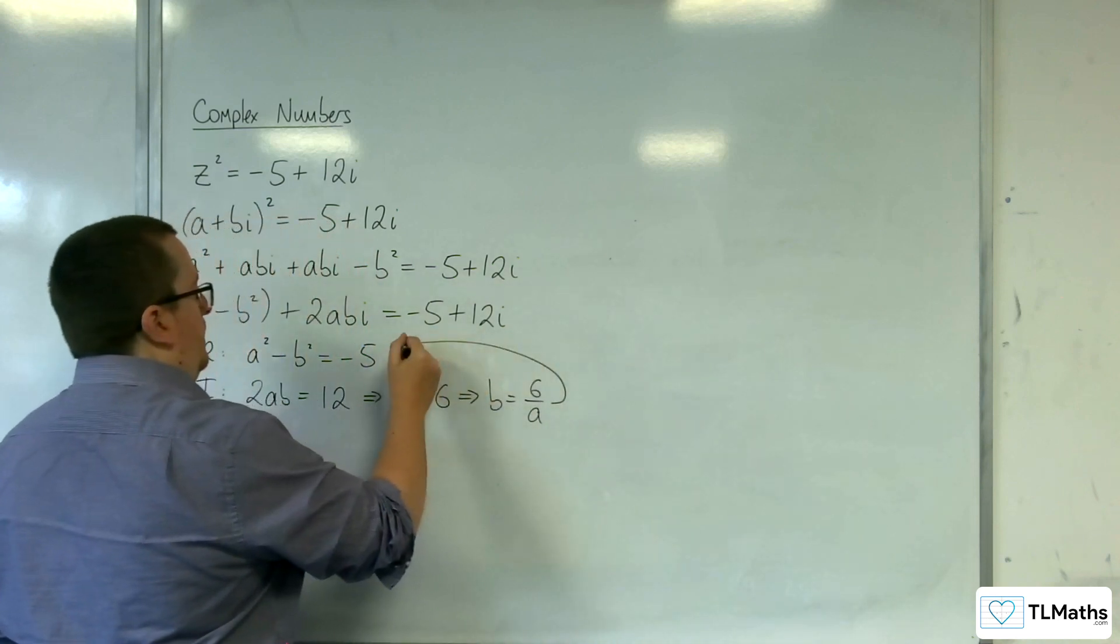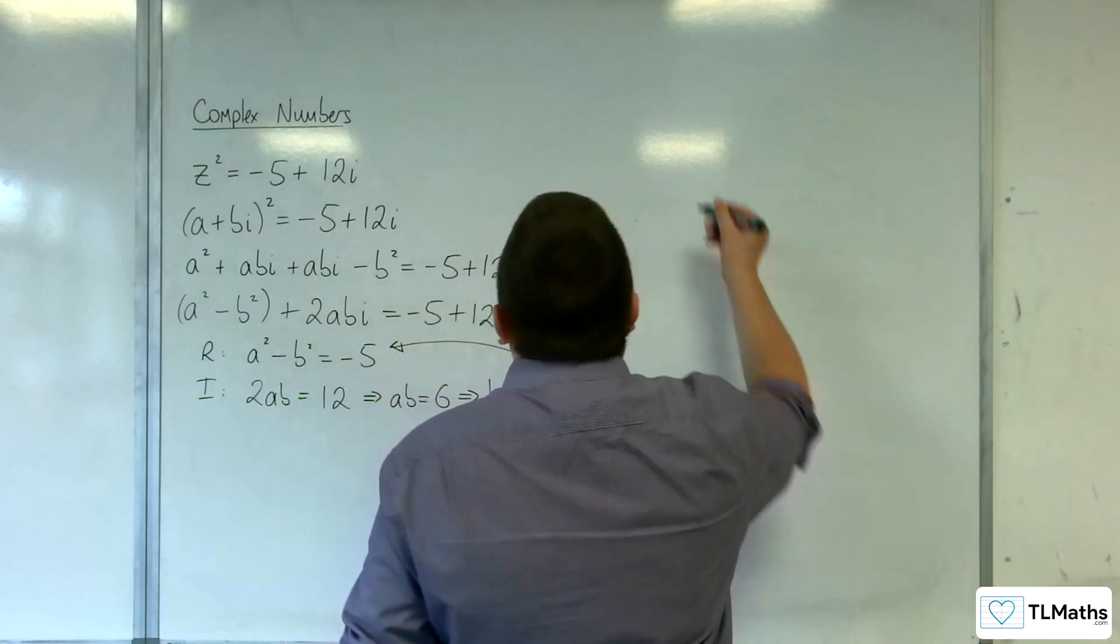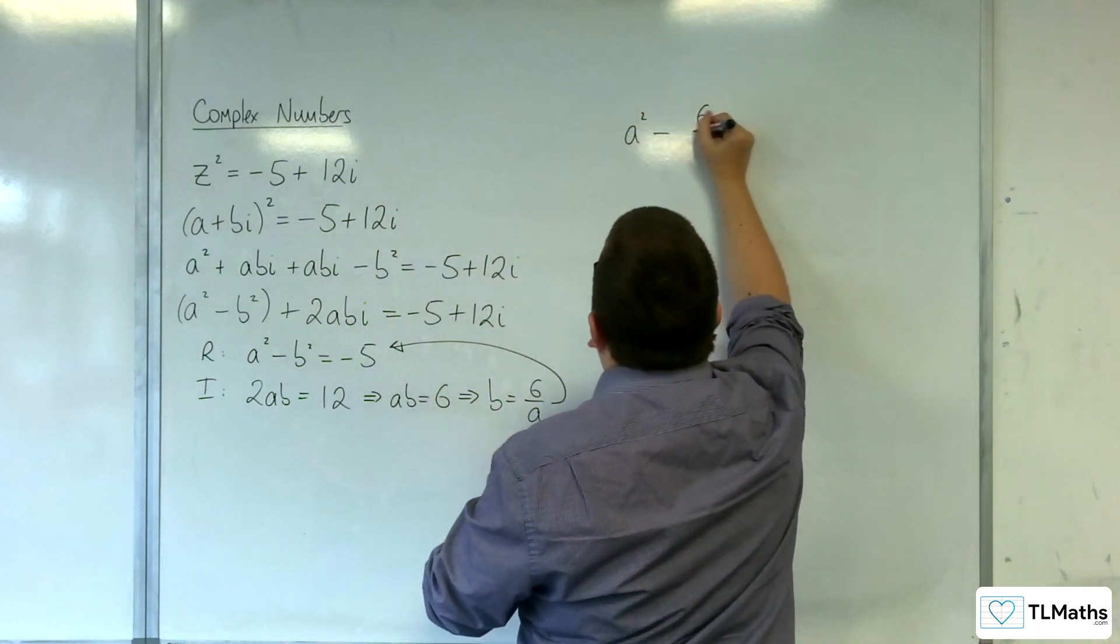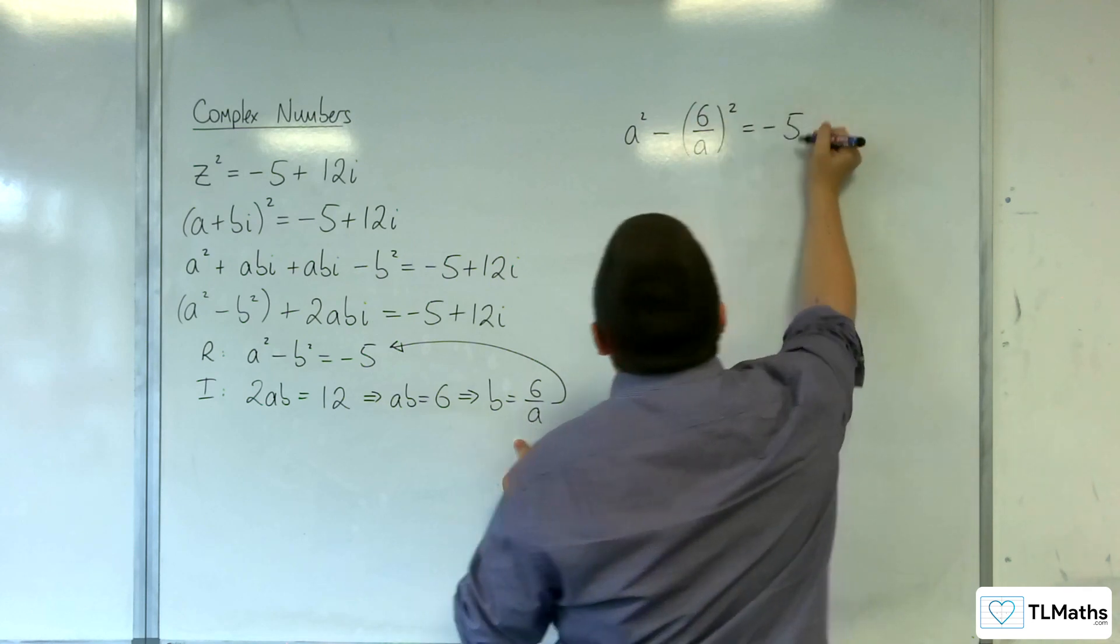And then let's rearrange this to get b equals, so b is equal to 6 over a. And I'm going to substitute that into the first equation.